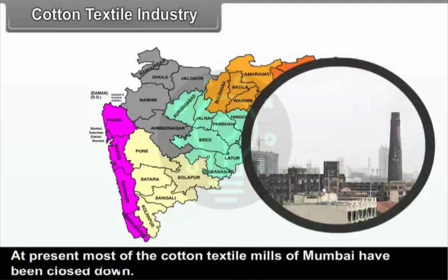Distribution of cotton textile industry: A. Nagpur and Amravati Division — As the raw material is amply and easily available, cotton textile mills were set up at Nagpur, Hinganghat, Akola, Pulgao, Badnera and Achalpur cities of the Vidarbha region. B. Nasik Division — Taapi Basin region is also well known for the production of cotton. Therefore, cotton textile mills were set up at Jalgaon, Chalisgaon, Dhule and Amalner cities of the Khandesh region. Besides this, Malegaon and Yavla, Nasik district also have cotton textile industry.